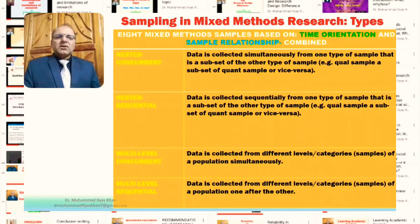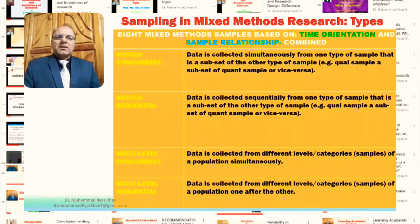The nested sequential sample is where data is collected sequentially — one after the other — from one type of sample that is a subset of the other type of sample. Generally, the qualitative sample is a subset of the quantitative sample, or vice versa. One sample is a subset of the other, but the data is collected in sequence.